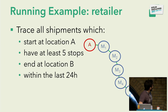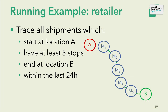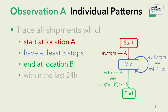Moving from toy examples to a real-world scenario: imagine you are a retailer wanting to trace contaminated shipments — all shipments starting from location A, finishing at location B, with at least five intermediate stops, all happening within the last 24 hours. The three individual states are: start at location A, intermediate stops, and finish at location B. On the graph you can see the conditions: start requires a started-event from A; for intermediate stops, the next shipment should start from where the previous finished; the end must finish at B with at least five intermediate stops.